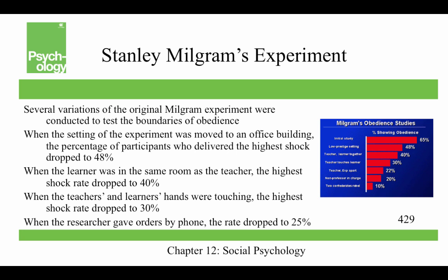Several variations of the Milgram experiment tested the boundaries of obedience. When the setting was moved to an office building, the proportion willing to give the highest shock dropped to 48%. When the learner was in the same room as the teacher, it dropped to 40%. When their hands were touching, it dropped to 30%. When the researcher gave orders by phone, the rate dropped to 25%. These variations show that when the humanity of the person being shocked is increased, obedience decreases, and similarly, when the authority of the experimenter decreases, so does obedience.